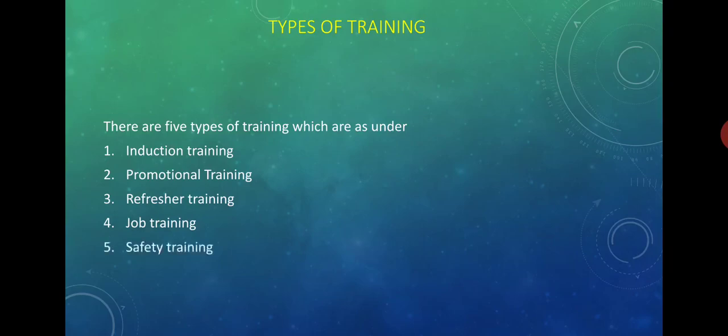The last type is safety training. Every employee is given safety training. This training is given to workers to handle dangerous machines and materials in order to avoid any fatal accidents. For example, pharmacists are trained to handle radioisotopes which are used as medicine or for diagnostic purposes.